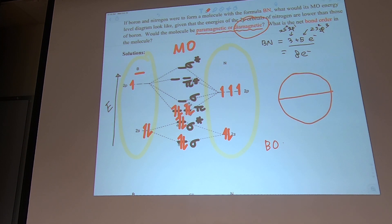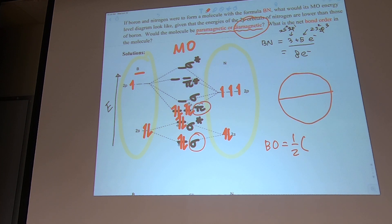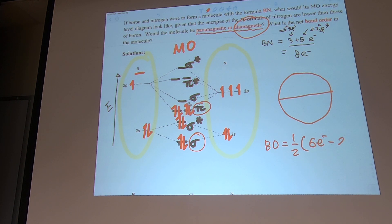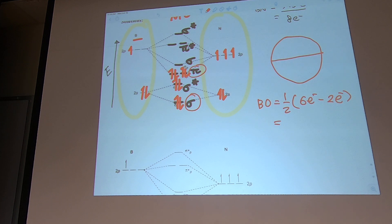Now, what is the bond order? Bond order equals one-half times (bonding electrons minus antibonding electrons). Counting the bonding orbitals, I see 6 electrons. In the antibonding orbitals, I see 4 electrons. So bond order equals one-half times (6 minus 4), which is 2.